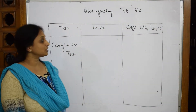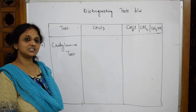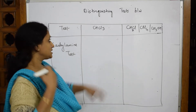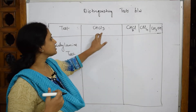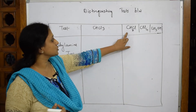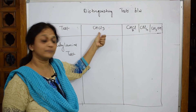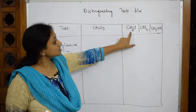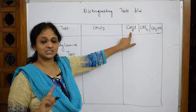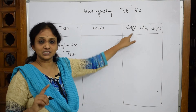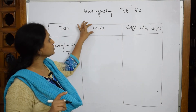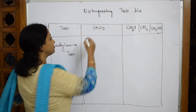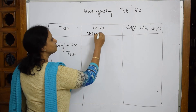Now let's see one more distinguishing test. Most students get confused here. What is the difference between chloroform (CHCl₃) and methyl chloride? That is the reason I've taken this difference. Whenever you see chloroform and they ask you to find the distinguishing test, there is one important test you have to remember.